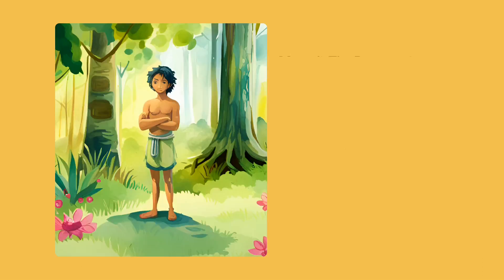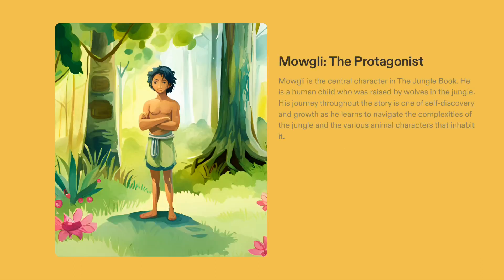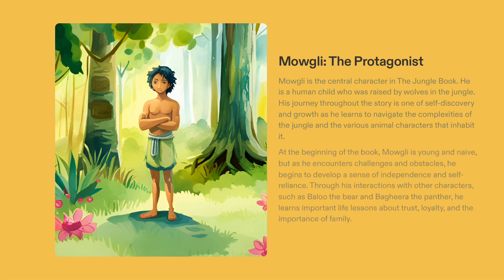Mowgli, the protagonist of The Jungle Book, is a young child raised by wolves in the jungle. His story is one of self-discovery and growth, and he embarks on a journey to explore the complexity of his surroundings and the characters that inhabit it. As he faces different challenges and obstacles, he learns to become independent and self-reliant. He also develops important life lessons about trust, loyalty, and the importance of family, with the assistance of his animal companions, such as Baloo the bear and Bagheera the panther.